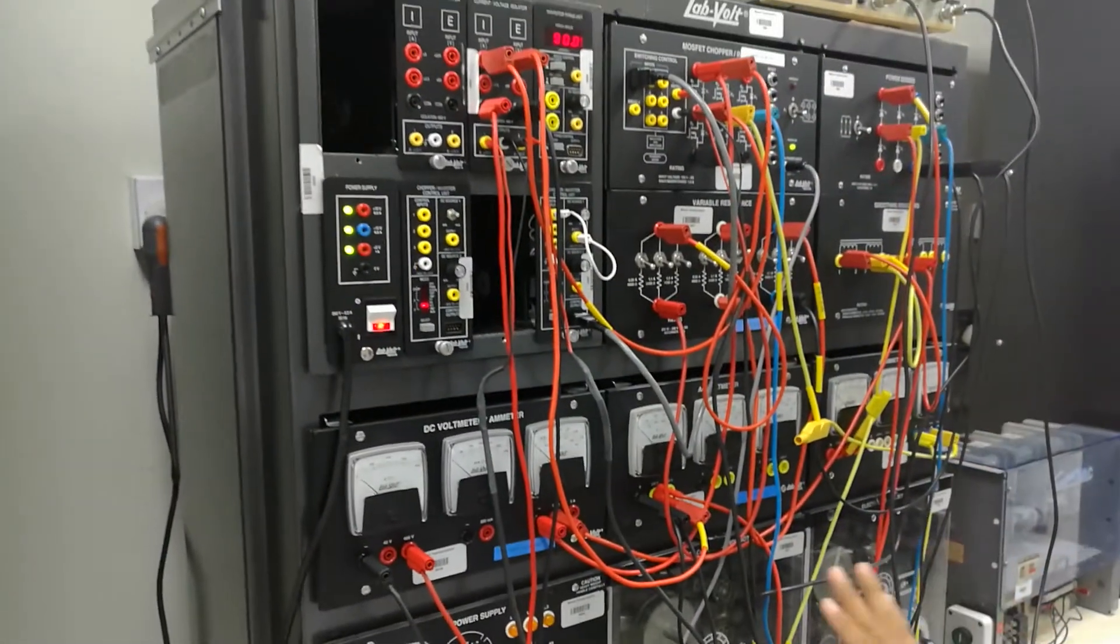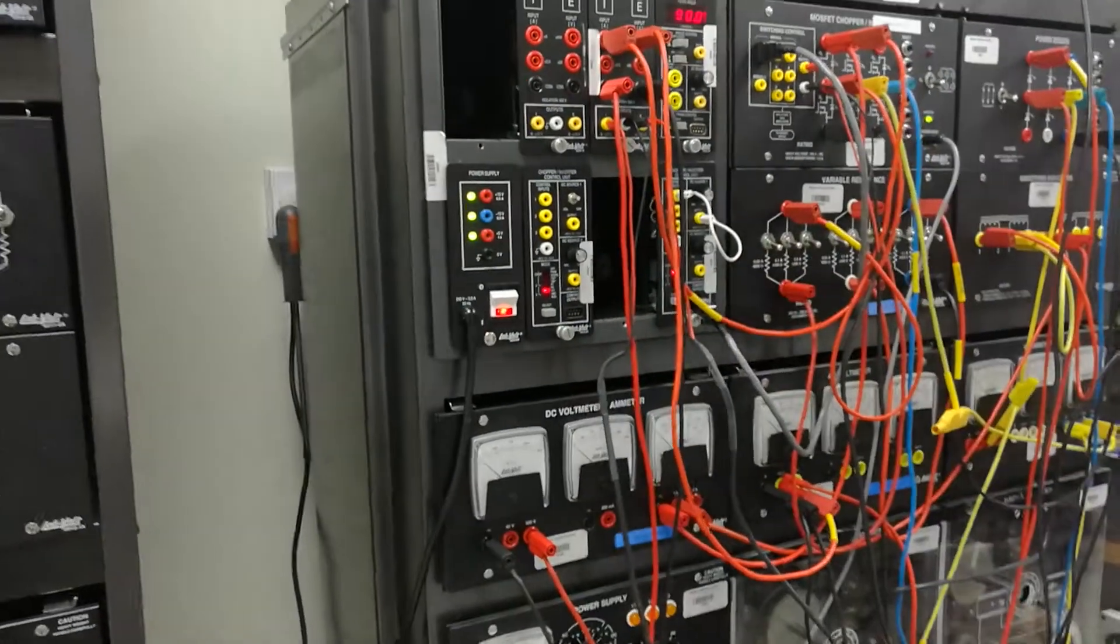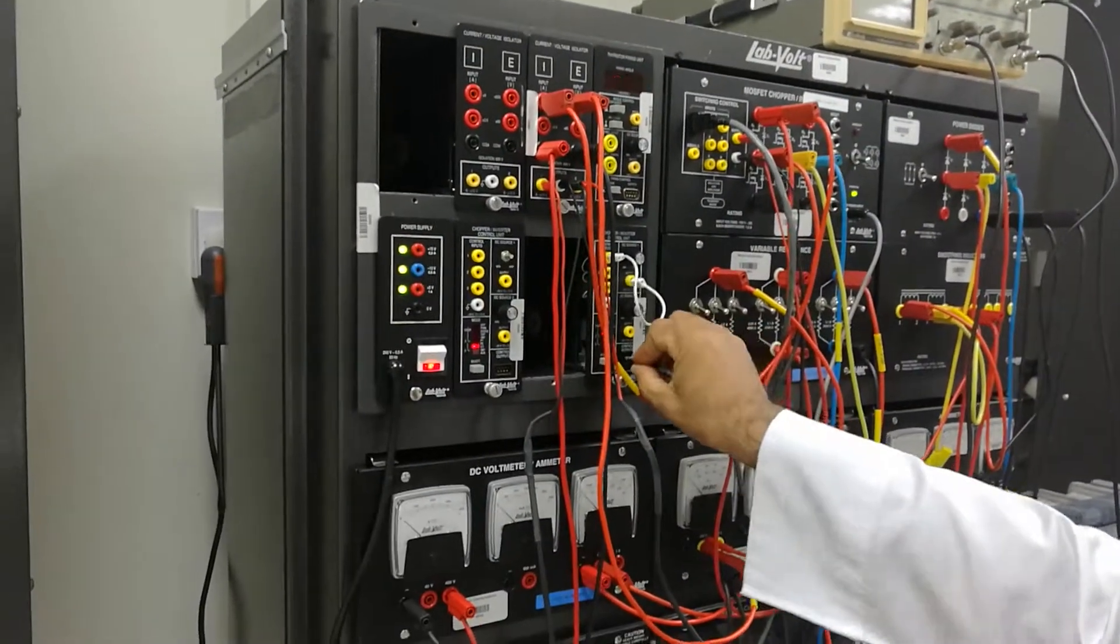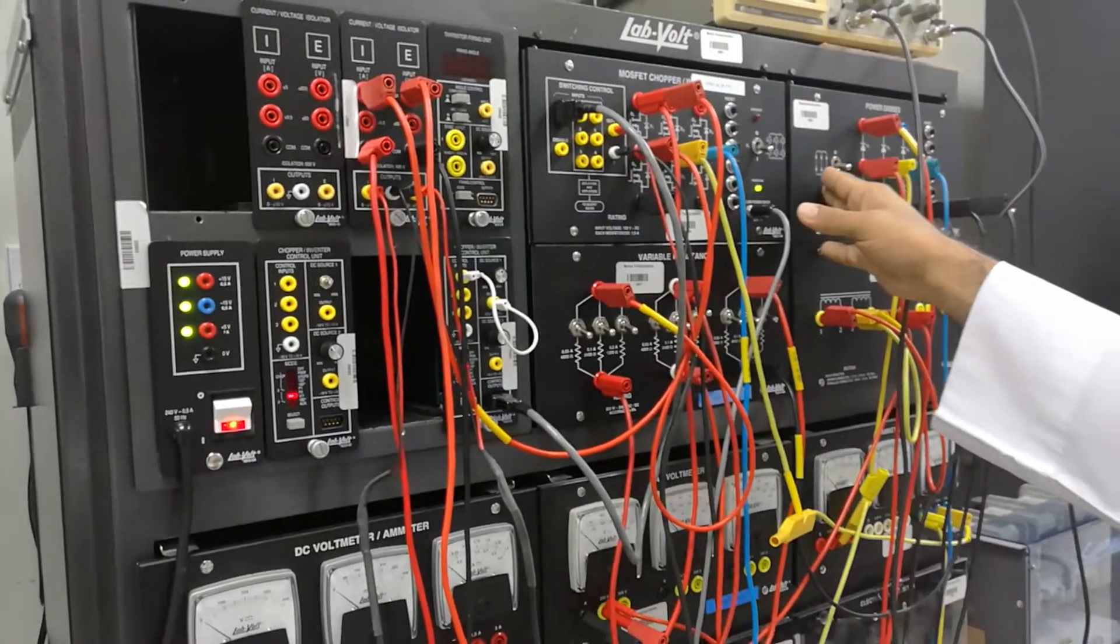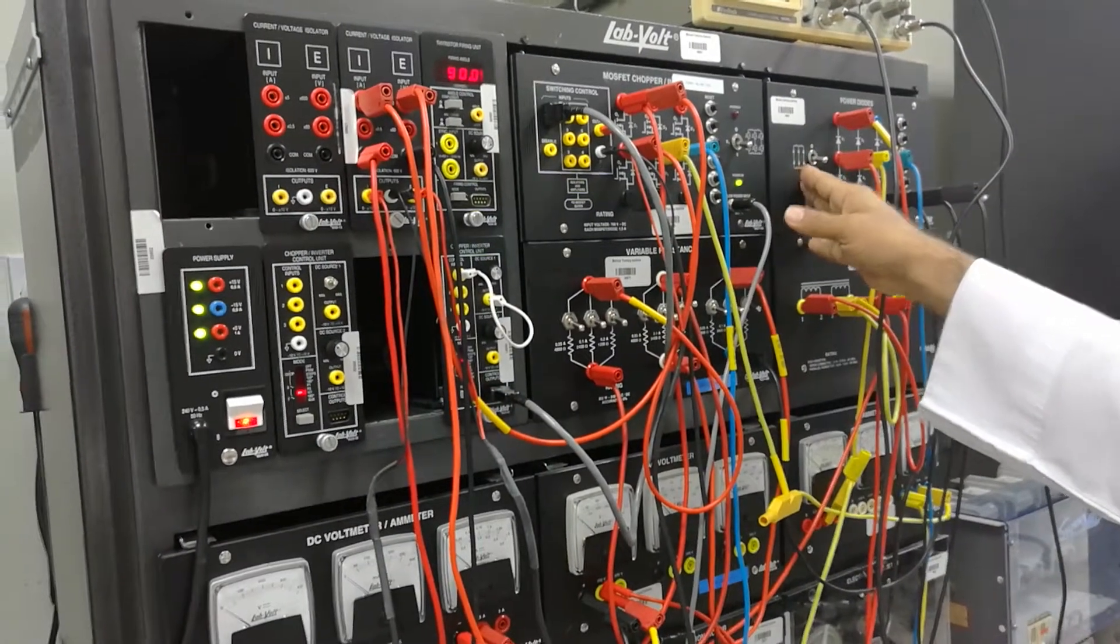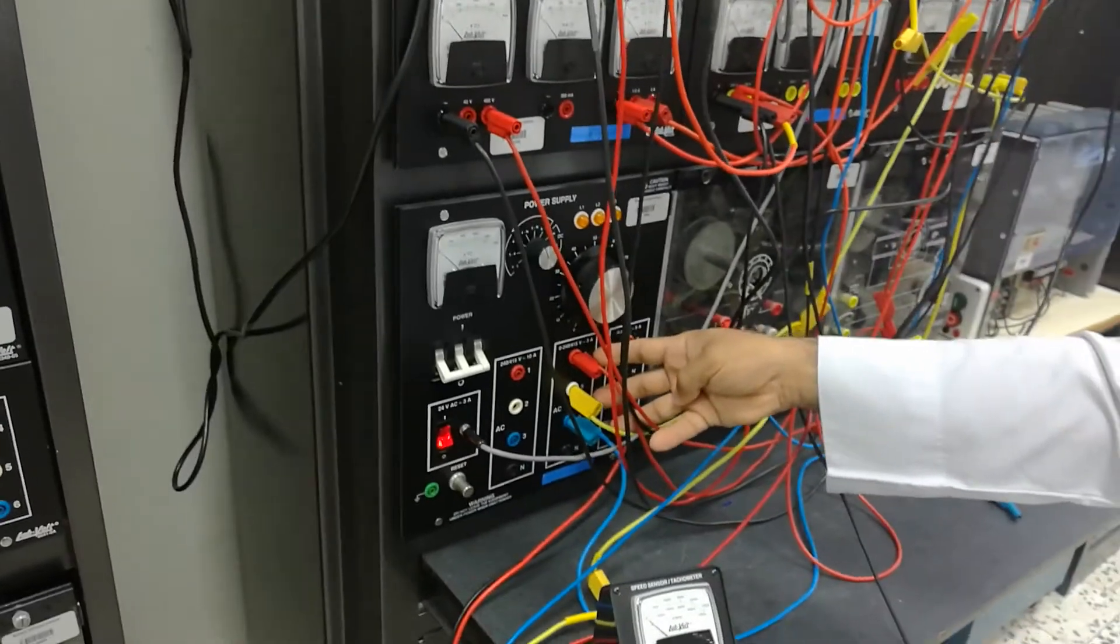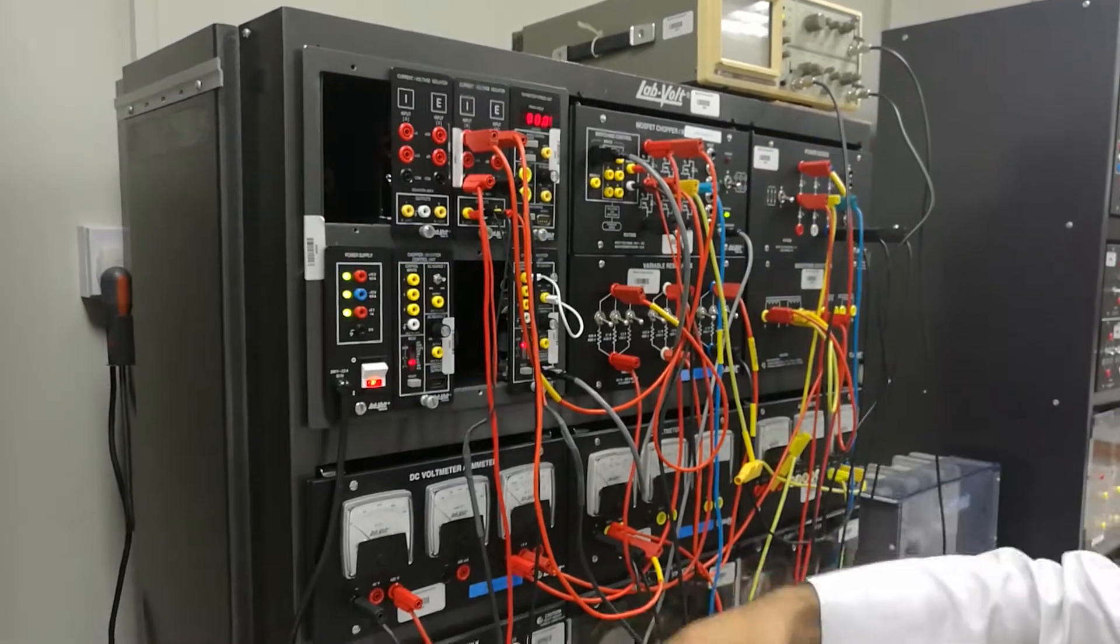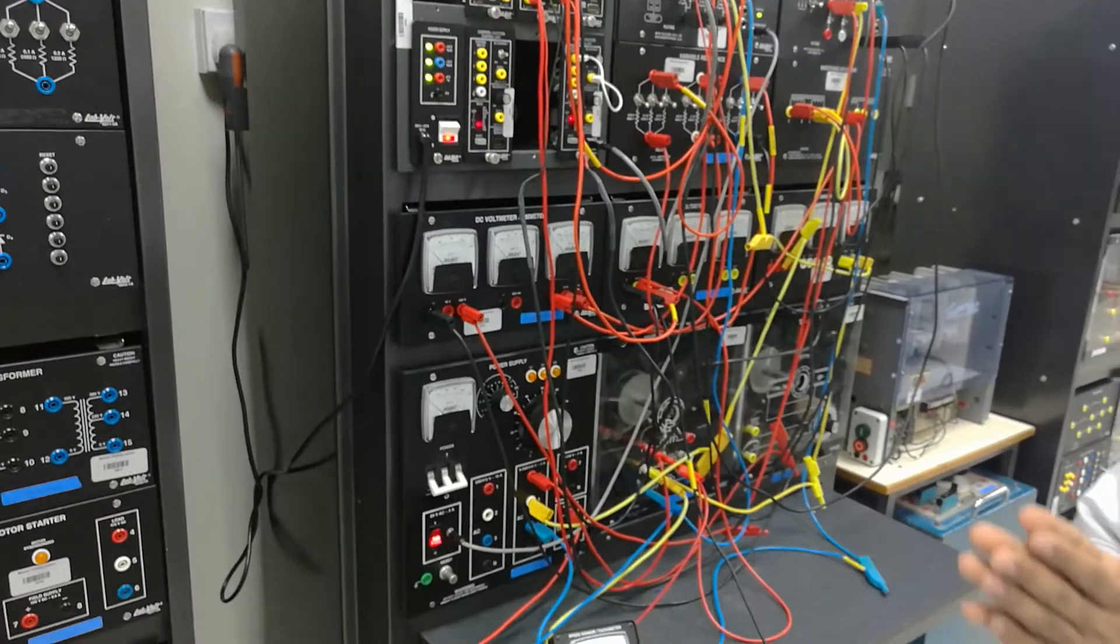We have a frequency converter using the 180 degrees method. This is the controller, this is the MOSFET inverter, we have a diode rectifier. The idea is to convert the power supply three-phase AC into DC, then from DC to variable frequency AC. So this is a variable frequency drive.